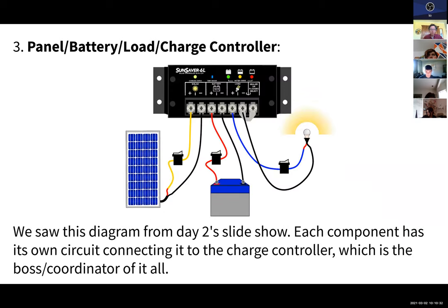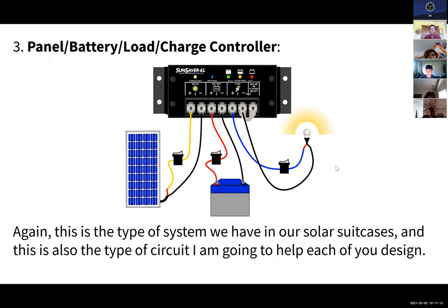This is the type of system you'll design for our class. Here's a diagram of what that kind of system would look like. We saw this diagram from the day two slideshow. There's the charge controller up at the top. One circuit is the solar panel connected to the charge controller. Another circuit is the charge controller and the battery. A separate circuit is the charge controller and the load. The charge controller is like the boss of everything.